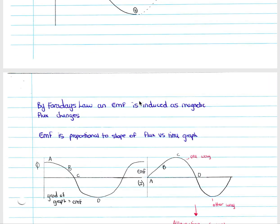By Faraday's law, an EMF is induced as our magnetic flux changes as we rotate the coil through the magnetic field. Our EMF is proportional to the slope of the flux-time graph. So the gradient of the flux graph gives us the EMF graph.